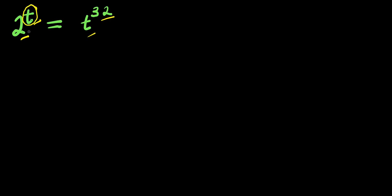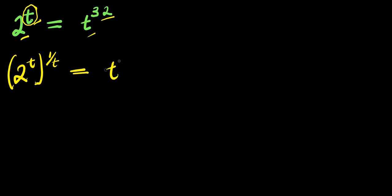I can decide to eliminate this t here. So in order to do that, I will multiply this exponent by 1 over t. So I can have 2 to the power of t, and this is raised to the power of 1 over t, which equals t to the power of 32, and this is raised to the power of 1 over t.